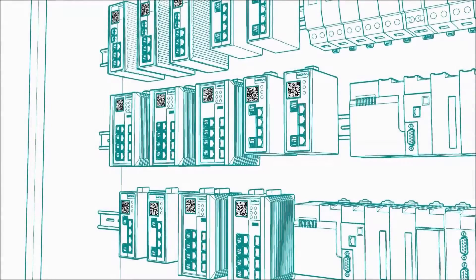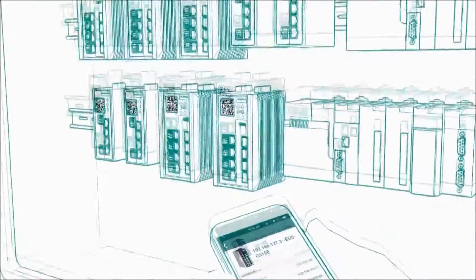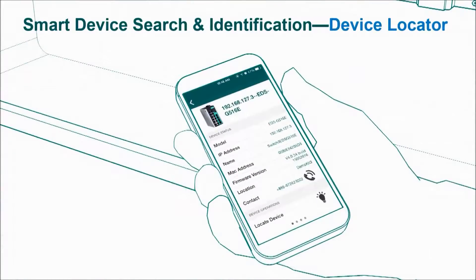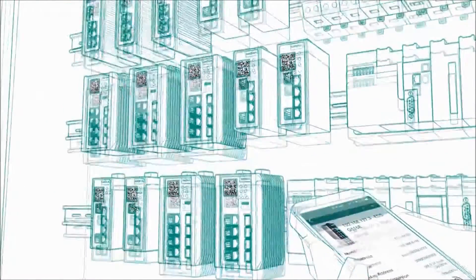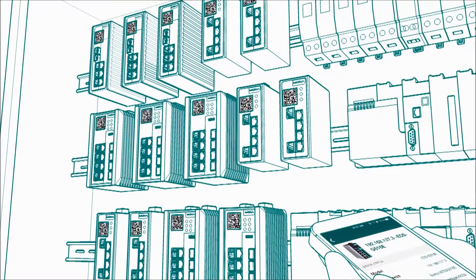When you have hundreds of Ethernet switches on-site, finding the specific one you're looking for can take forever. But not anymore. Press the device locator button and the device's LED lights will start blinking, allowing you to locate it right away.